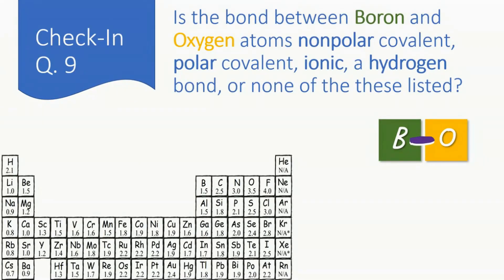Now let's move on to our check-ins. So keep in mind this is check-in number nine, so make sure that you're looking at number nine on your assignment. Is the bond between boron and oxygen atoms nonpolar covalent, polar covalent, ionic, a hydrogen bond, or none of these listed? For clarification, here is boron and oxygen.